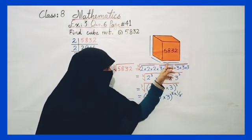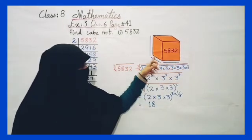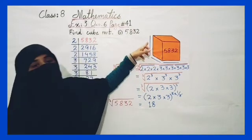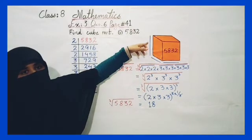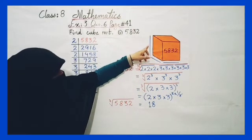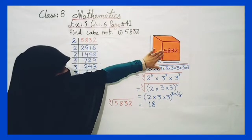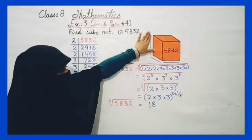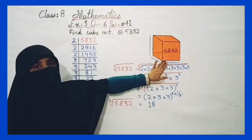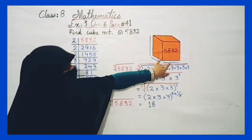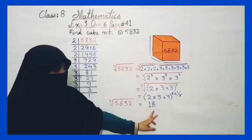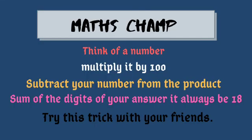You can call this the height or the length. Since it is a cube, all sides are equal. So the length, breadth, and height are all 18.